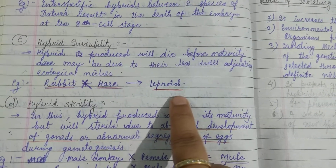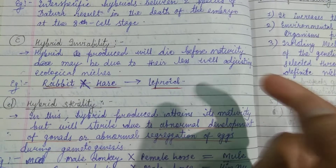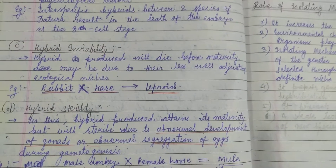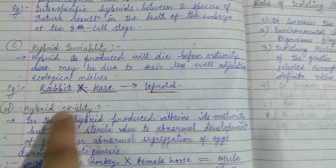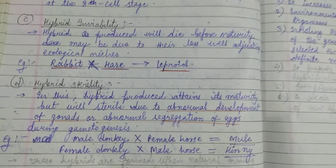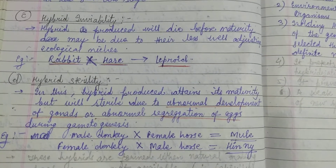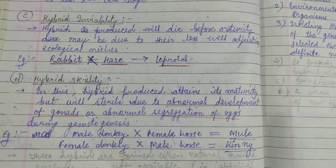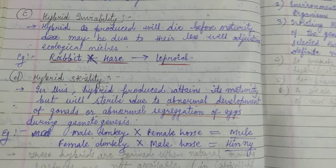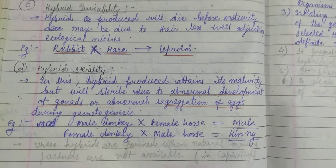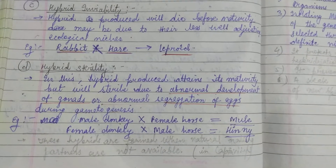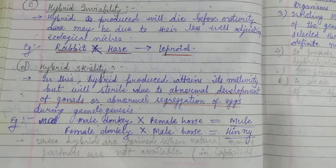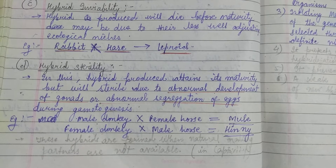In hybrid inviability, the hybrid is formed but does not develop into the adult form, possibly due to poor adaptation to ecological niches. In hybrid sterility, the hybrid attains maturity but is still sterile due to abnormal development of gonads or abnormal segregation of chromosomes during gametogenesis.